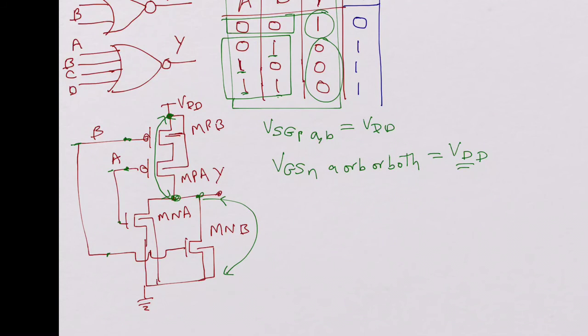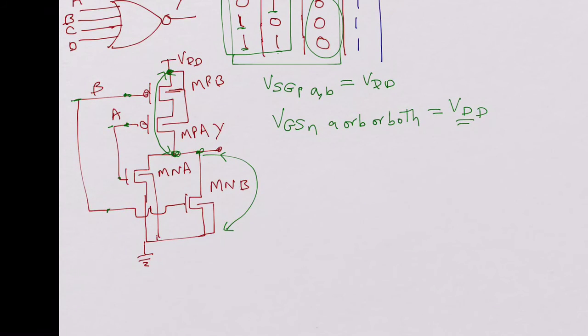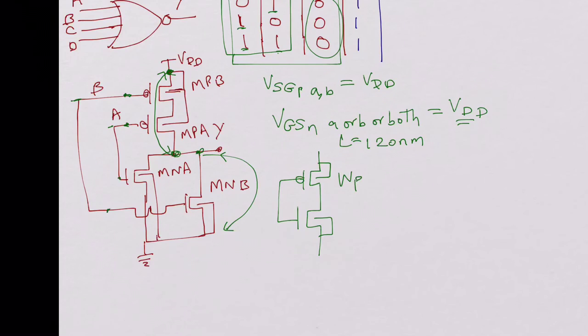Now let's look at the device sizes here. In an inverter we said there is a PMOS and an NMOS, and the length is for 120 nanometer technology. All the lengths are 120 nanometers in a digital library. For an inverter, the P channel width is WP inverter and the N channel width is WN inverter. We looked at it usually saying WP is greater than WN because of the mobility.